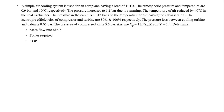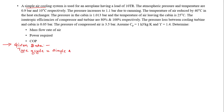We are supposed to find the mass flow rate, power required, and the COP. Before starting, we will note down the given data and draw the T-S diagram. The type of cycle given is clearly a simple air cooling system.